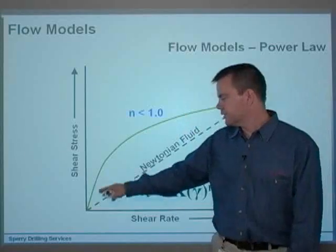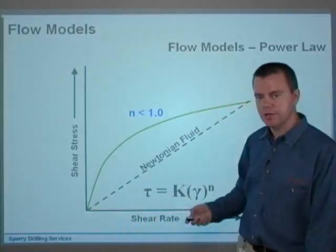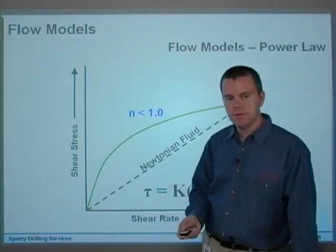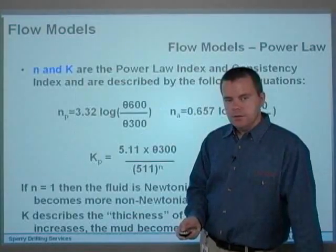So the power law model basically just goes straight through the origin, regardless. It always starts off here and then curves up.